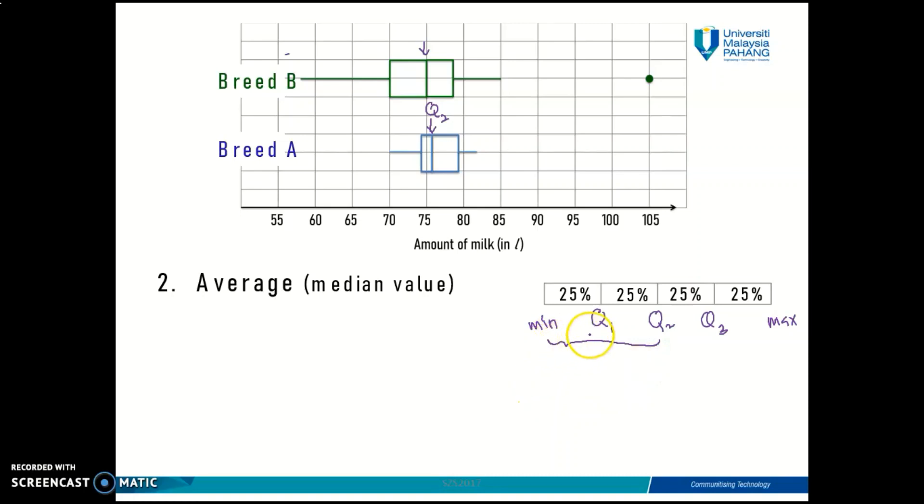And from quartile 2 until maximum, how many percent of data is included here? Also 50%. So median is the middle value in your data set. All data which is smaller than your median—you have 50% of data smaller than your median, and you also have 50% of the data which has higher value than your median.